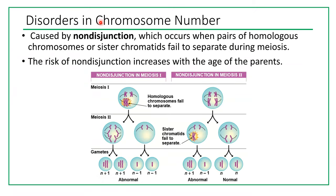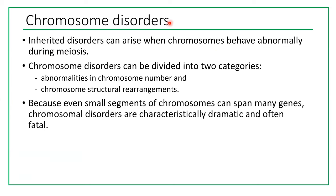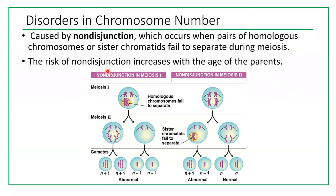The first category of chromosome disorder is disorder in chromosome number. It is caused by non-disjunction, which occurs when a pair of homologous chromosomes or sister chromatids fail to separate during meiosis. The risk of non-disjunction increases with the age of the parents.